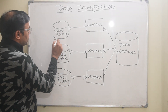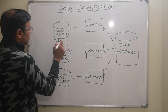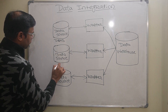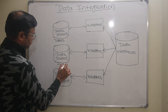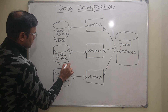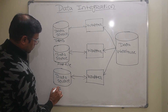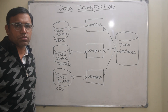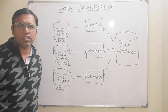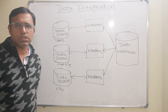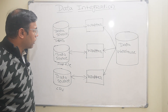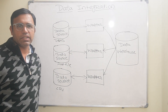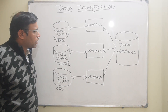Here is an example — there are many data sources. This can be a DBMS or any database, this can be a file, and this can be a CSV file. So data is coming from multiple sources which are in different conventions and use different formats.